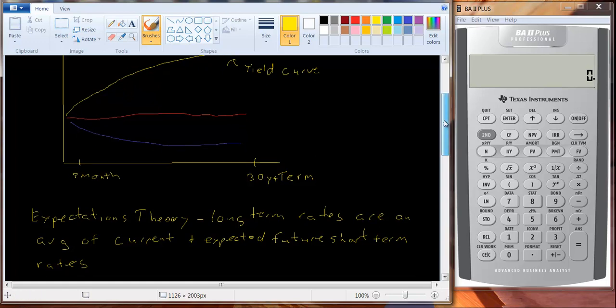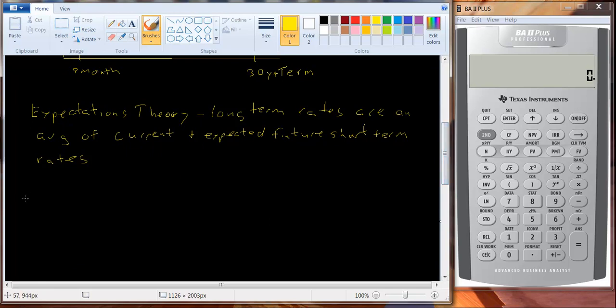There are a couple other theories of the term structure, and let me mention those. The second theory that we oftentimes talk about, and this can be used alone or in conjunction with the expectations theory, is the liquidity theory, or the liquidity preference theory. This basically says that long-term bonds are riskier than short-term bonds. They're riskier because they're more interest rate sensitive. So, if they're riskier, you expect to receive a premium or a higher rate for taking on a long-term bond.